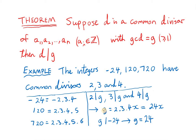We can write g as 2 times 3 times 4 times some unknown integer x. Now, g divides the 3 integers, of course, so in particular it must divide minus 24. So 24x must divide minus 24, which means that g must equal 24.